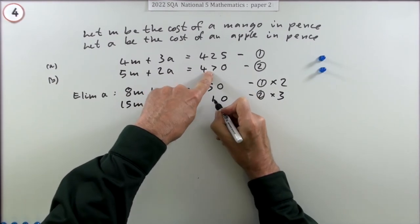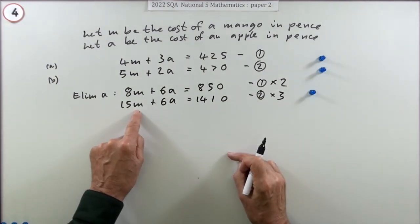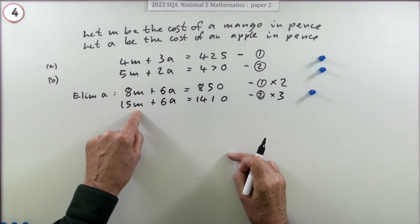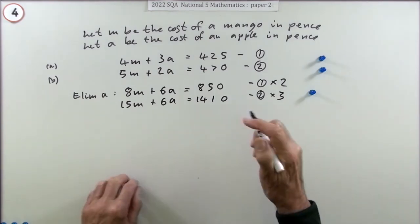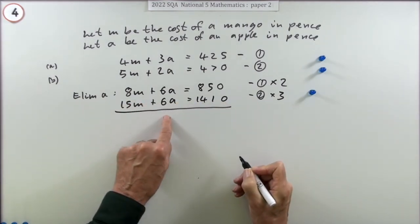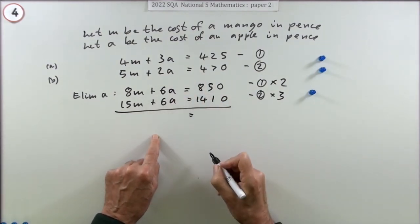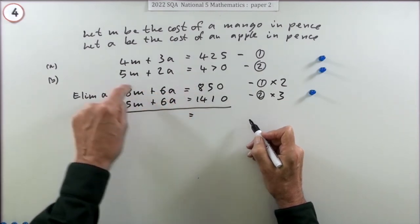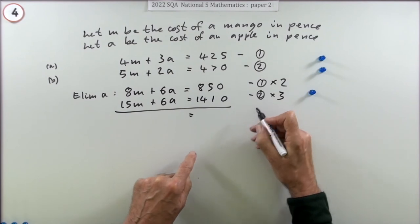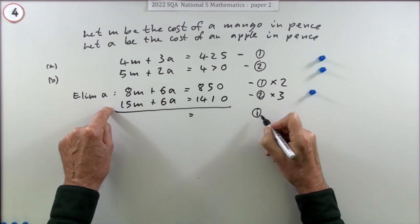Doing that gets a mark. Now that you've got them the same, I'm going to subtract them. The sixes will knock each other out. I'll do number two take away one. That's going to come to zero, then 15 take away 8 is 7m, and this take away that will be 560.